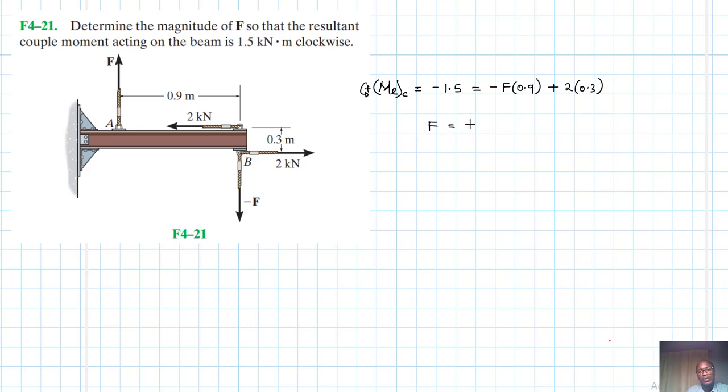Take F to the other side, it will be just 2 by 0.3 plus 1.5, then divided by - divide this by 0.9. Therefore our F is just going to be equal to 2 by 0.3 plus 1.5 divided by 0.9.